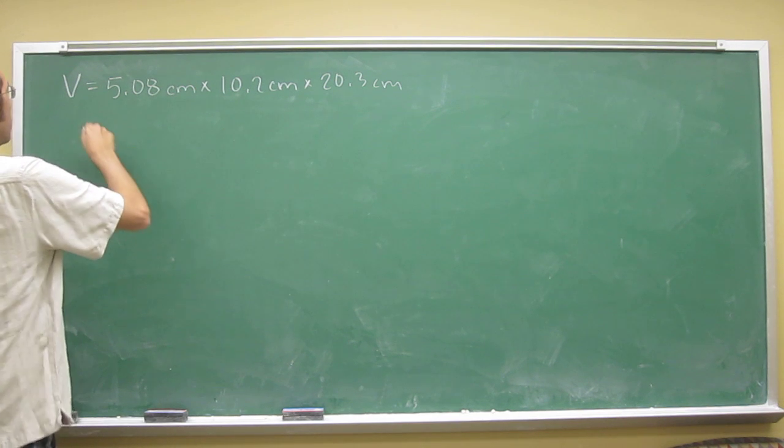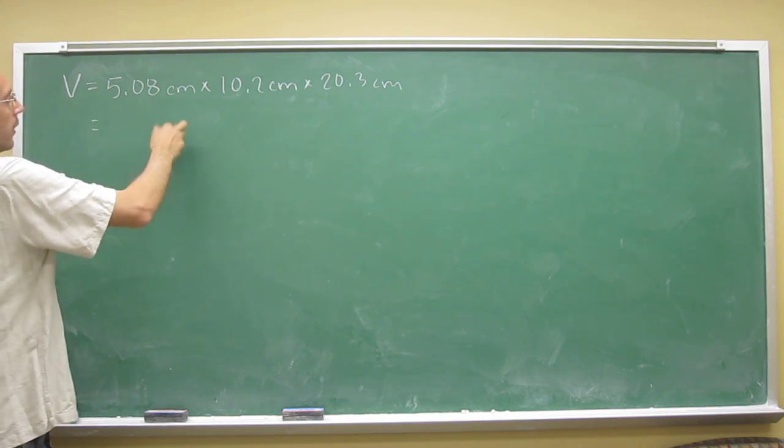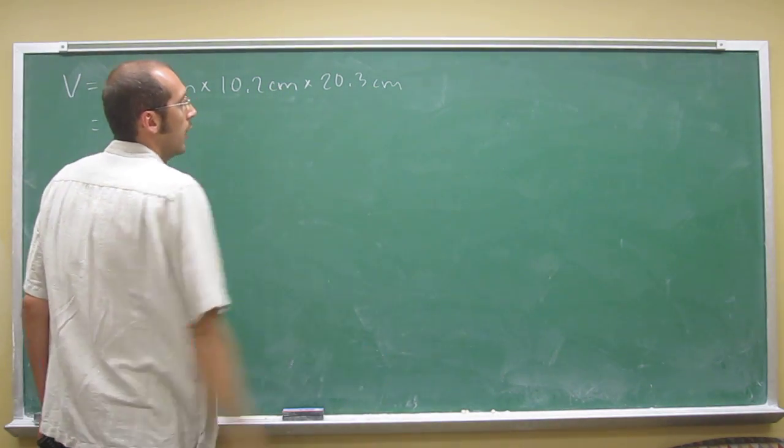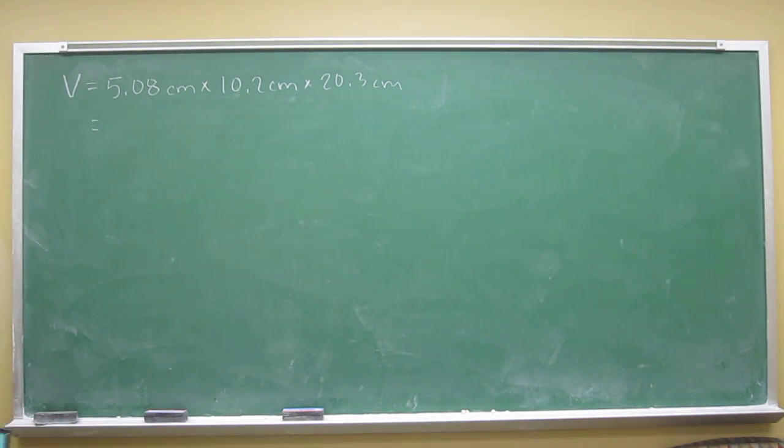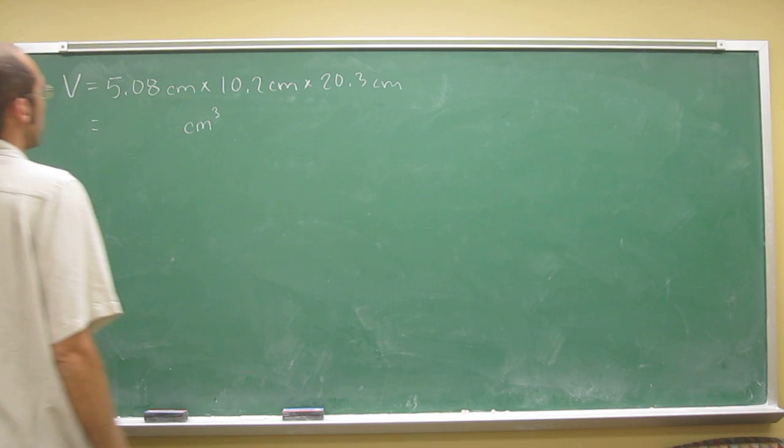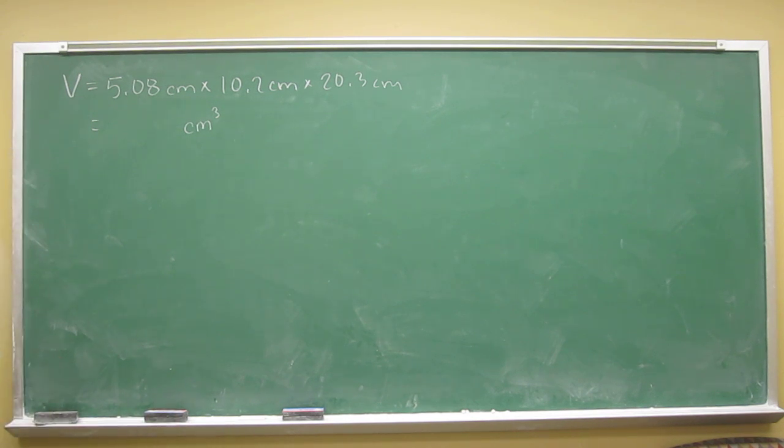So just multiply all of those together, and if you didn't know that, you should remember that centimeters cubed is the units of volume for solid objects. If you multiply centimeters × centimeters × centimeters, you're going to get a number that has the units of centimeters cubed. So let's just multiply these things out.